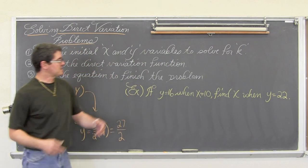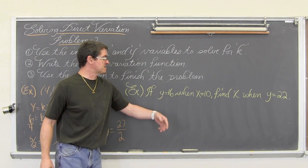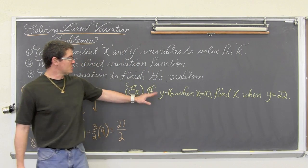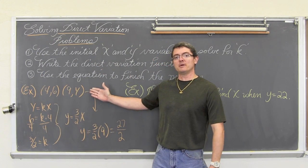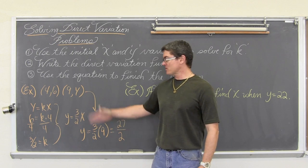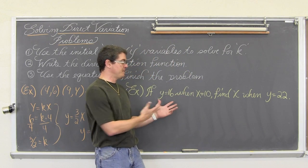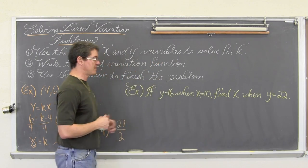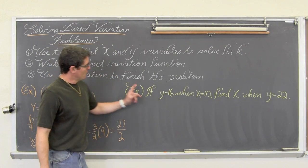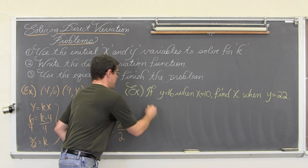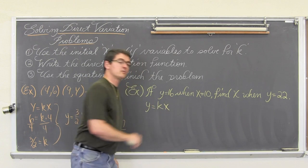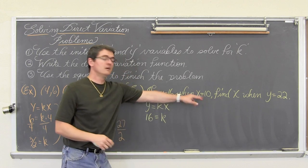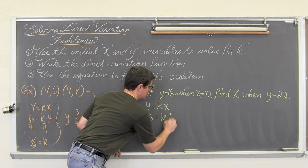Okay, over here it says if y is equal to 16 when x is equal to 10, find x when y is 22. This question really is exactly the same as this problem, but sometimes when a book starts with just giving coordinates and it gets into a word problem, students get confused, or vice versa. But these really are the same questions. Let's get this next example started. We have y is 16, x is 10, so again, direct variation, y equals kx, y is 16. Solving for k, when x is equal to 10.